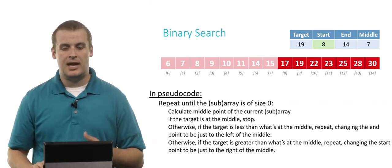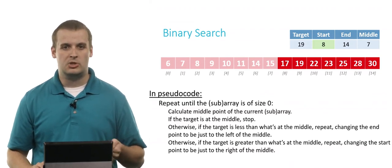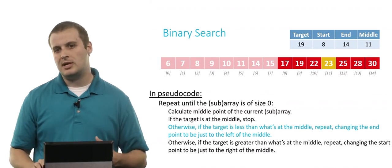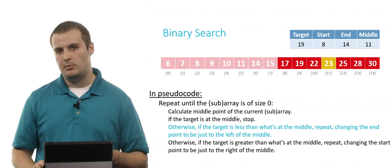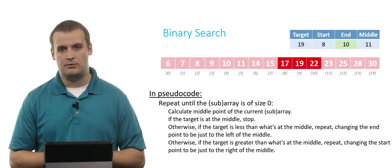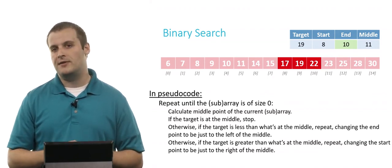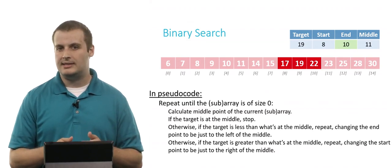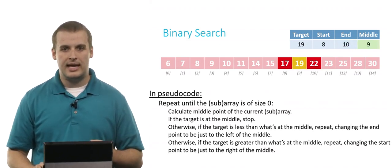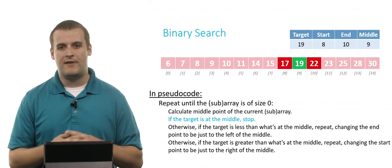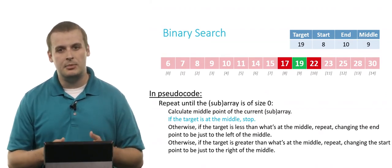The endpoint is still 14, so we calculate the new midpoint: 8 plus 14 is 22, divided by 2 is 11. Is 23 what we're looking for? No — we're looking for a value less than that. So we change the endpoint to be just to the left of the midpoint: the new endpoint becomes 10. We've now eliminated 12 of the 15 elements. We calculate the new midpoint: 8 plus 10 divided by 2 is 9. And the target is at the middle — we found exactly what we were looking for. Binary search complete.